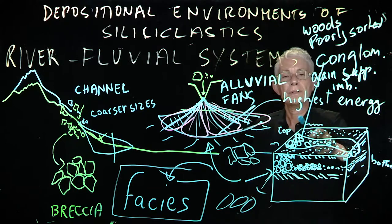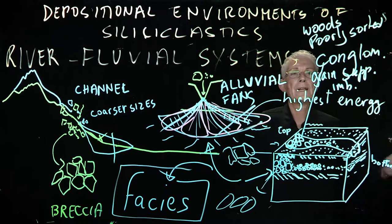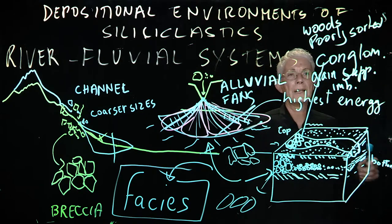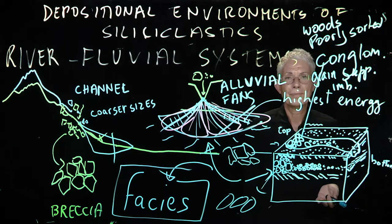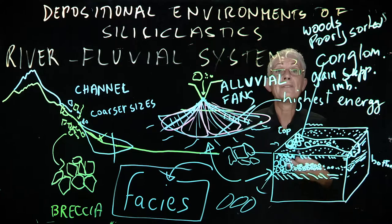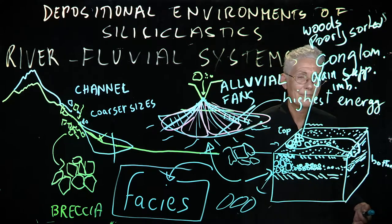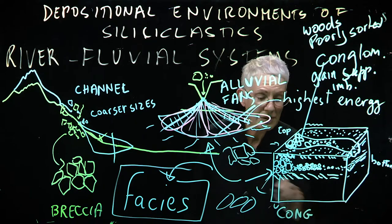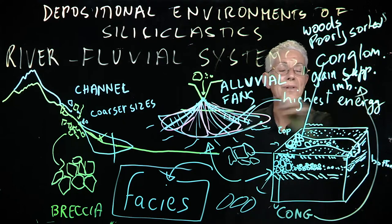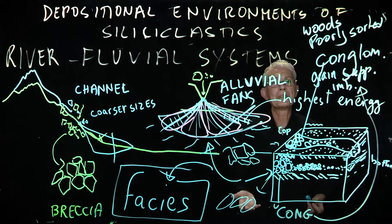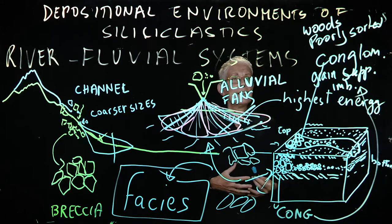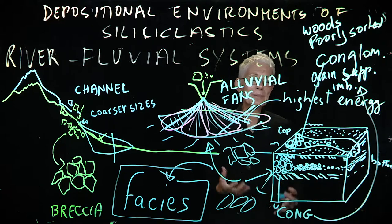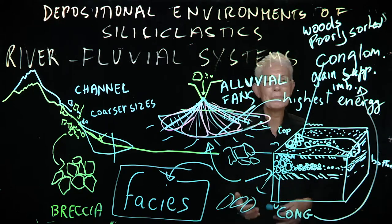All these, poorly sorted, grain-supported conglomerates with fragments of wood and imbrication, that's a facies. I have described a facies, the aspect of that rock. So it's not anymore a simple conglomerate. This conglomerate has become something more. It has become a facies. It has become a lot more information about the environment of deposition, about what and where this sediment was deposited.